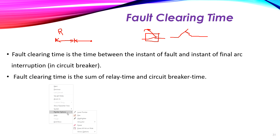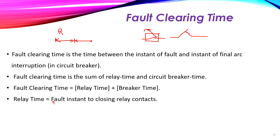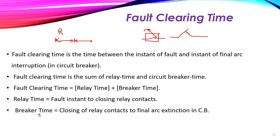The fault clearing time is the sum of the relay time plus the circuit breaker time. The relay time is the duration from the fault occurrence instant to the closing of the relay contacts. The breaker time is from the closing of the relay contacts to the final arc extinction inside the circuit breaker.